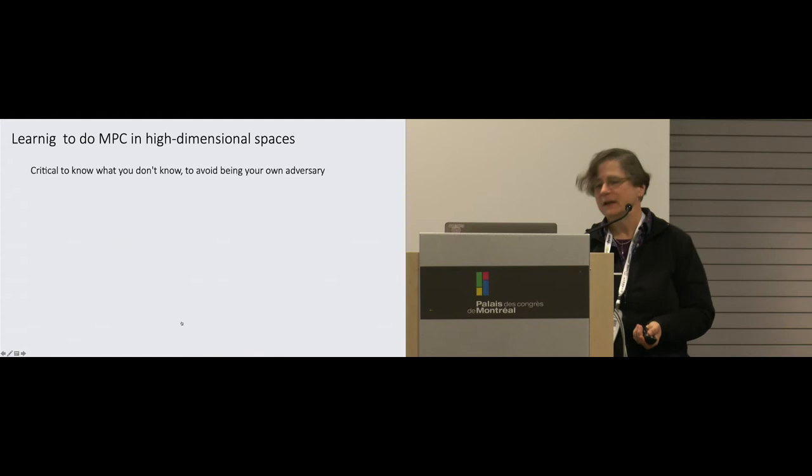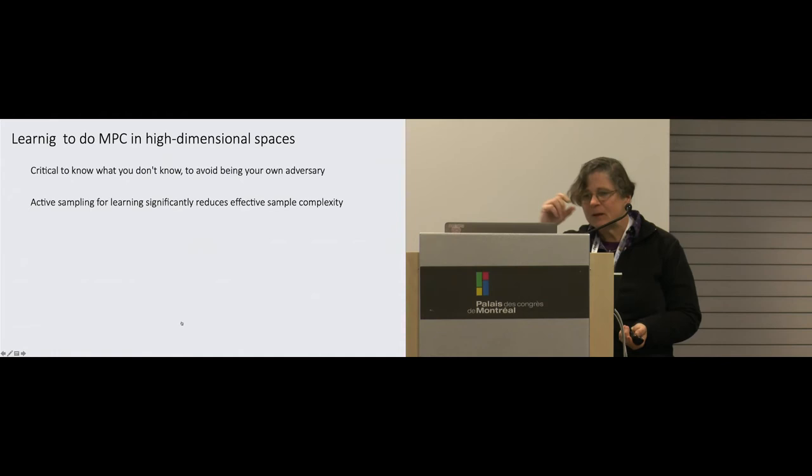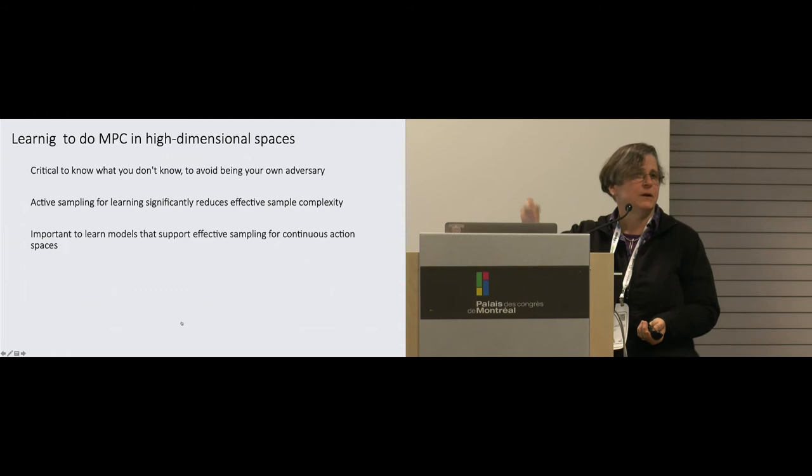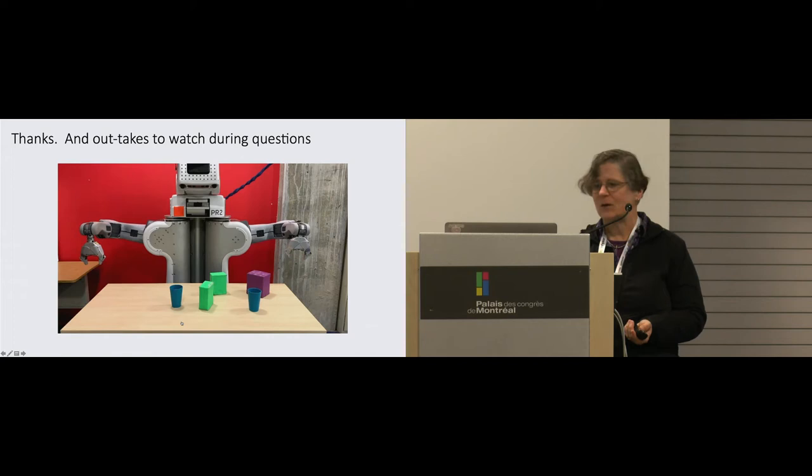Just to recap here, the talk was about learning to do model predictive control in high-dimensional spaces. As in almost every application of learned models to the world, it's really important to know what you don't know. That kept us sampling action choices inside the region of things that we actually had data to support. It's important also to actually be deliberate in your information gathering. Actively reasoning about what information you need can reduce the wear and tear on your robot a lot. And at least for us, it was important to be able to learn models that actually support the particular planning methods we're going to use later. With that, I will say thank you and take questions.